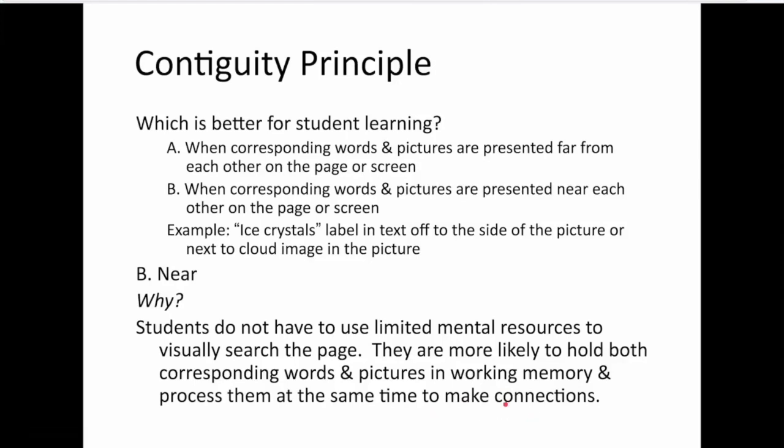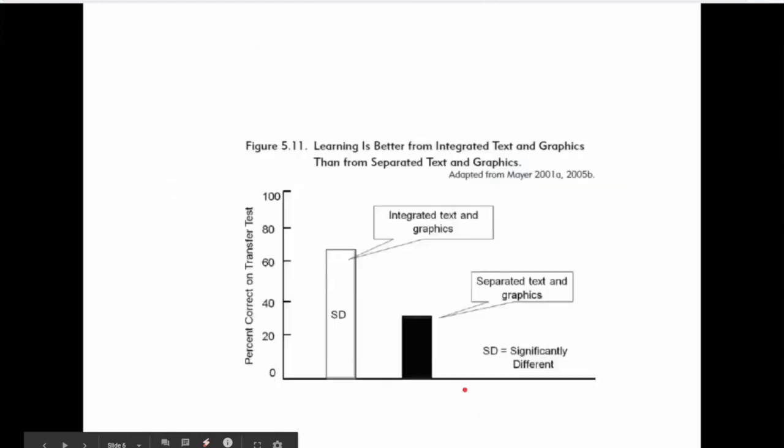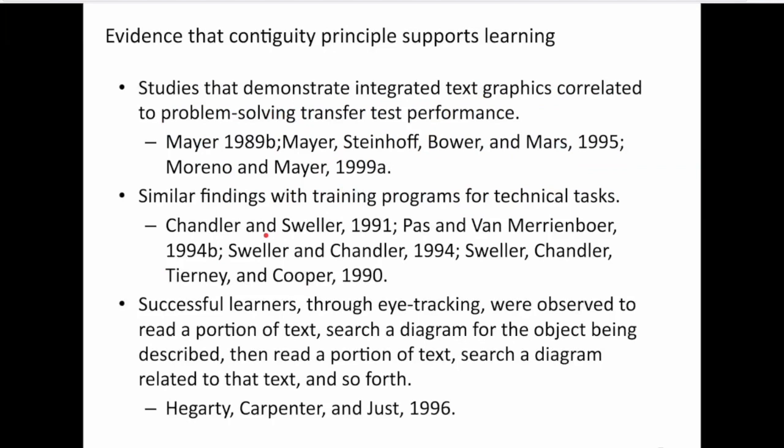The easing of the visual search makes it easier to keep both in working memory, particularly because they don't have to be kept there as long. Evidence from a number of studies, this one's adapted from a couple of Mayer studies, showing quite a substantial impact. Again, as we mentioned in multimedia, this is on transfer tests. So more impact for these principles, these multimedia principles on the CLI knowledge component principles, things with rationales. Lots of studies support it.